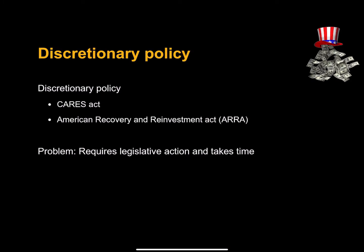There are a couple of ways that the government could do this. One is through discretionary policy. Examples of discretionary policy include the CARES Act, which was a response to the COVID shock, and the American Recovery and Reinvestment Act, which was a response to the recession following the financial crisis. The problem with this type of policy is it requires lawmakers to get together, draft a bill, implement it, and get it out there — and that takes time. Sometimes that time is called a lag.